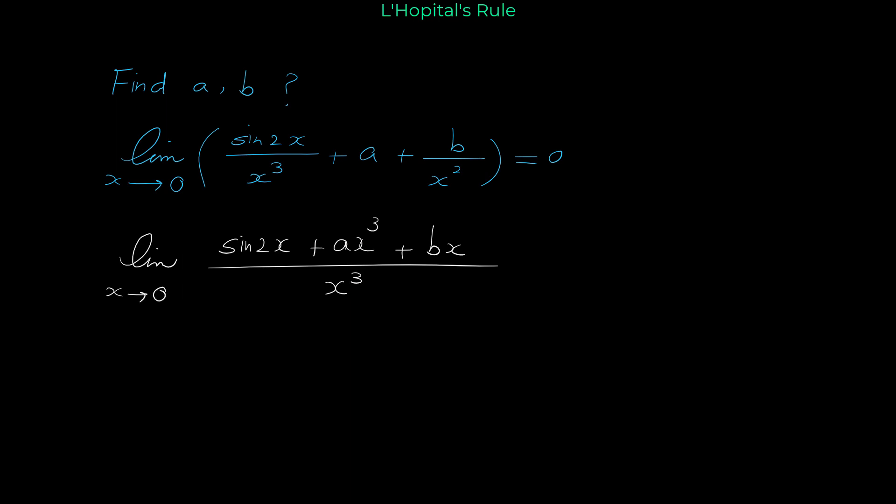As x approaches 0, we want to find the values of a and b such that this limit equals 0. If you plug in 0 by direct substitution, the denominator is 0 and the numerator is sine of 0, which is 0; a times 0 is 0; and b times 0 is 0. So this limit is in the form 0 over 0, which is an indeterminate form, and we can use L'Hôpital's rule.